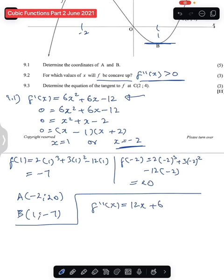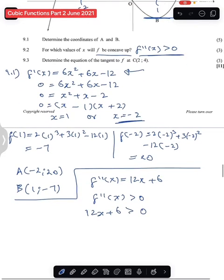Okay, so for this to be concave up, the second derivative has to be greater than zero, which means twelve x plus six has to be greater than zero. And that means twelve x is greater than negative six. Divided both sides by twelve, it has to be greater than negative half.